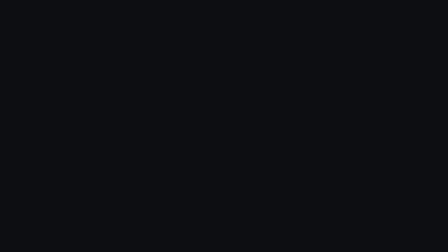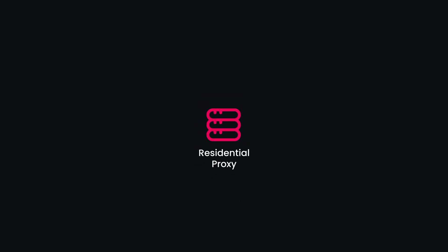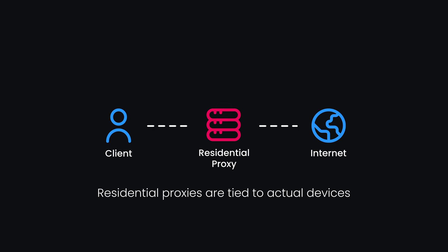Now let's get into practical tips for bypassing Cloudflare restrictions. One of the most effective ways is to rotate IP addresses, ideally using residential proxies. Unlike data center proxies, residential ones are tied to actual devices and locations, making them appear more like real users. A proxy service gives a new IP address with each request or after a set number of requests. Proxies that allow sticky sessions use the same IP for a brief period to mimic an actual browsing session, which can prevent detection.